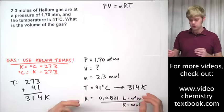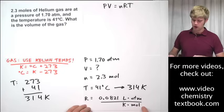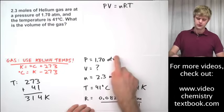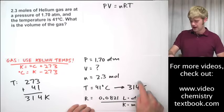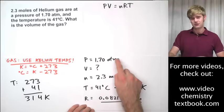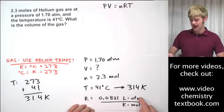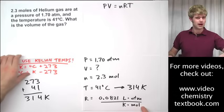All right. If any of the units were different than what they are on R, we would have to convert them so that they were equal. So for example, if pressure were 1.70 KPA and we have ATMs down here, we'd have to convert KPA into atmosphere so that it would be the same as the units on R. All right. Keep that in mind for the future.